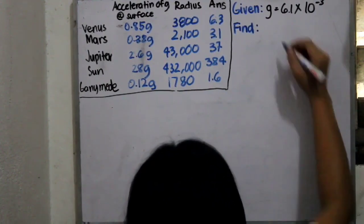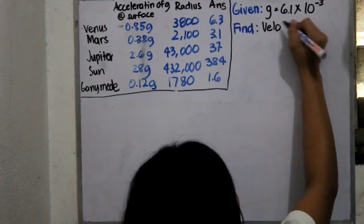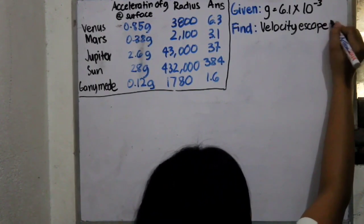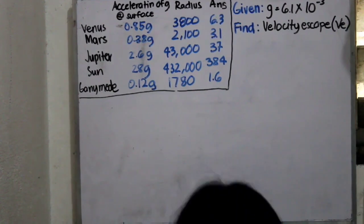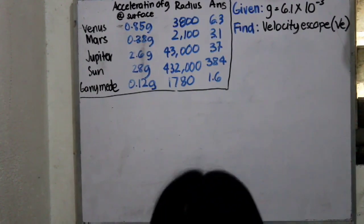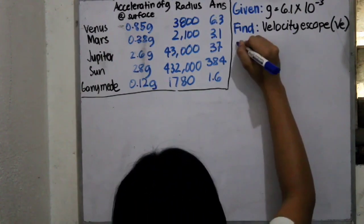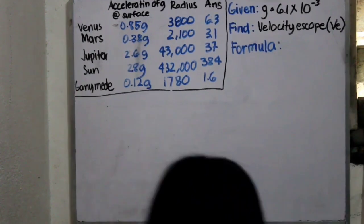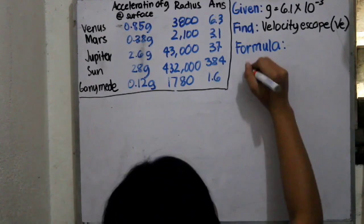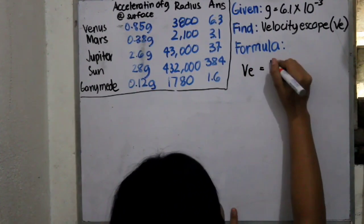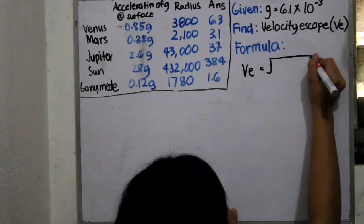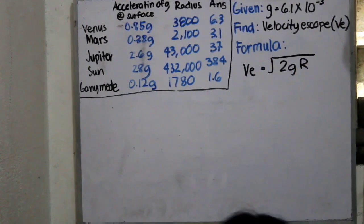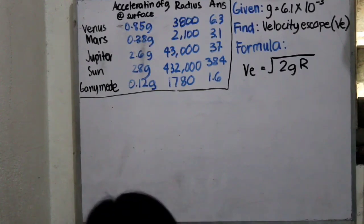The missing is the velocity escape, which is signified by VE. So, we also know our formula. And our formula for this problem will be VE is equals to square root of 2gR. So, first, let's try our solution for Venus.